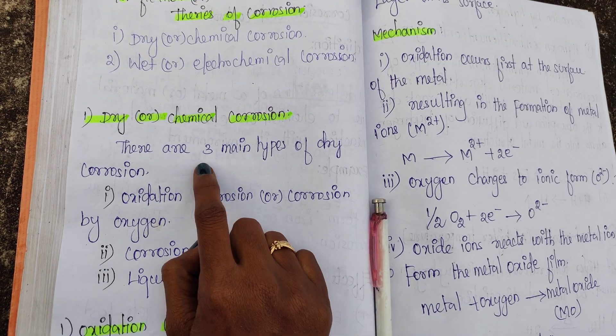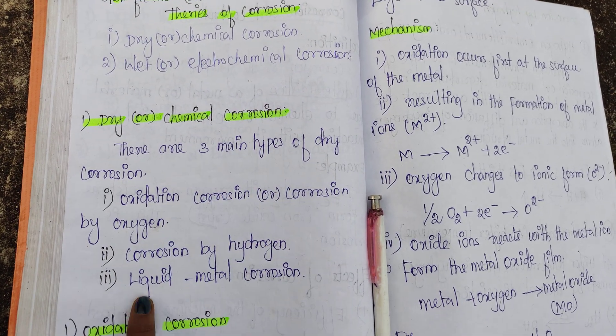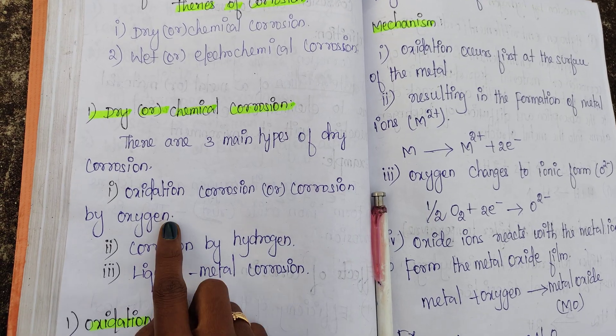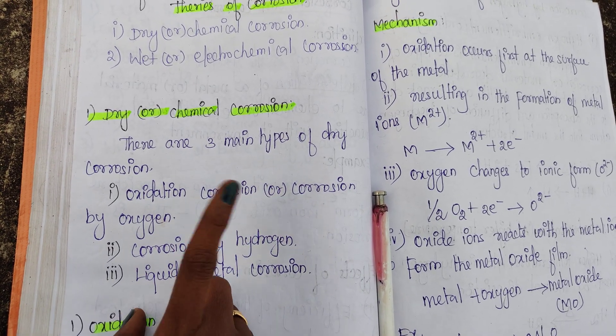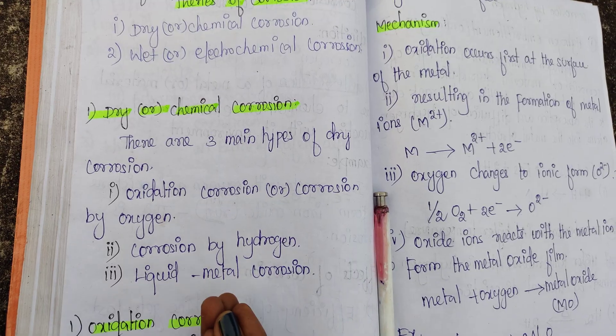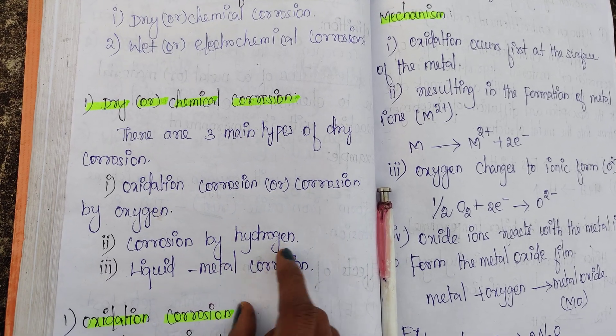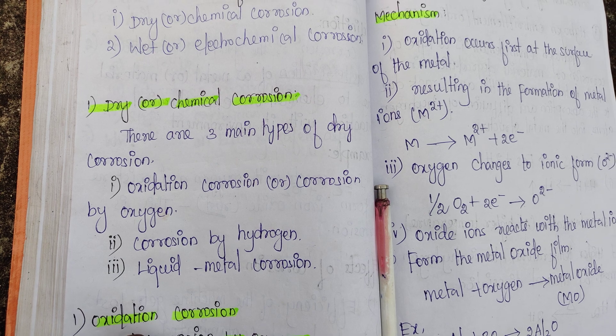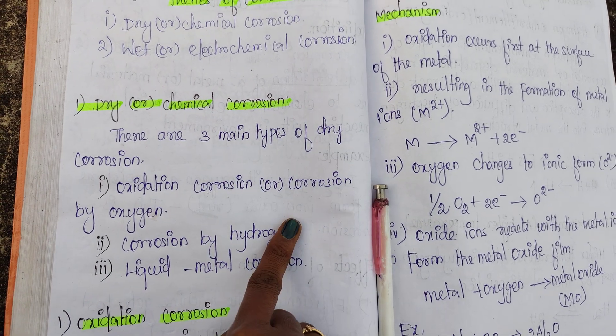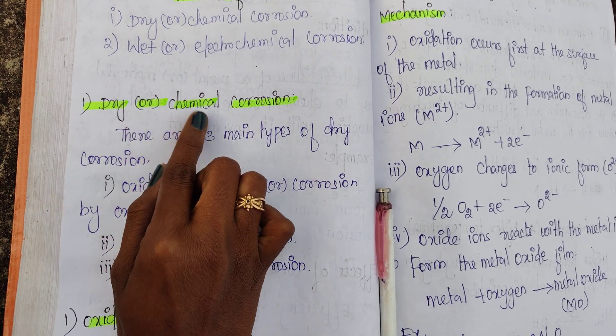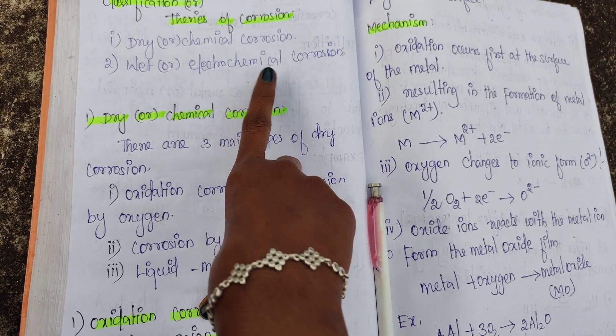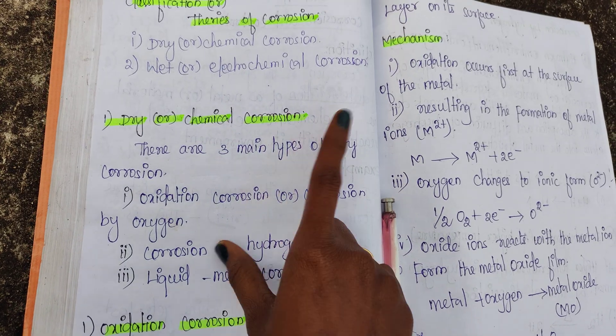Dry or chemical corrosion has three classifications: one is oxidation corrosion, then corrosion by hydrogen, and liquid metal corrosion. These three types are dry or chemical corrosion.